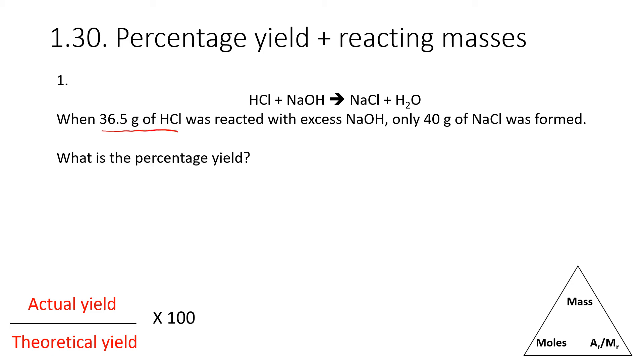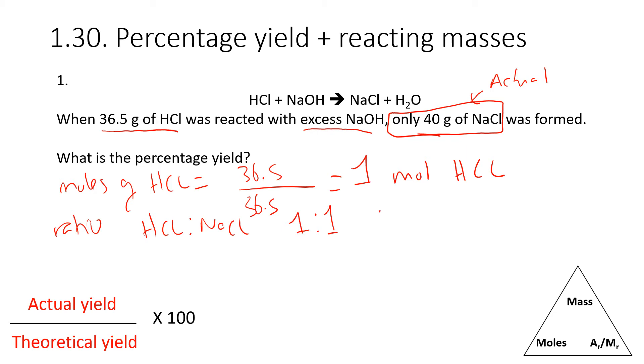So step one, we have 36.5 grams of HCl with excess NaOH, and only 40 grams of NaCl was formed. So that is going to be our actual yield. We're going to calculate the theoretical yield first, and then we can calculate the percentage yield. So we're going to figure out the moles of HCl by doing 36.5, which is the mass, divided by the MR of HCl, which also happens to be 36.5. That means we have one mole of HCl. We are looking at NaCl, so we need to look at the ratio between HCl and NaCl. And since it's one to one, we therefore should produce one mole of NaCl.